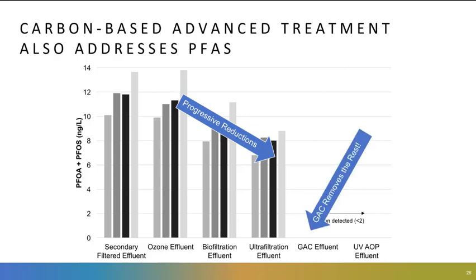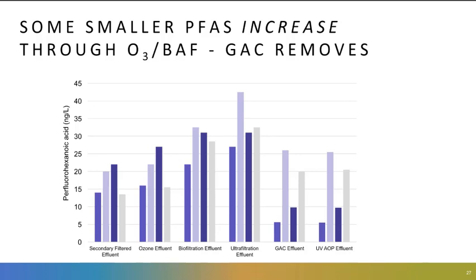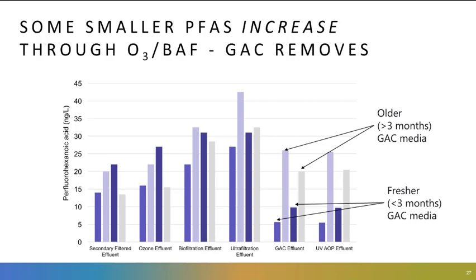Looking at the carbon-based advanced treatment, it also addresses PFAS. Here is a combination of PFOA and PFOS — these processes gradually remove little by little, likely due to the association of PFAS with particles. Then we get a step change after the GAC to remove PFOS and PFOA — that polishing step is really what gets us our last removal. The flip side is we see an increase in some smaller PFAS through ozone and biofiltration, likely due to the oxidation of precursor compounds that were there all along but we weren't measuring. They turn into the ones we care about throughout the treatment process, but the GAC step removes them.